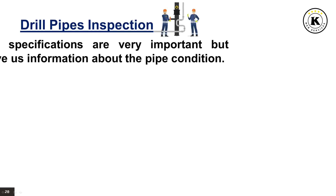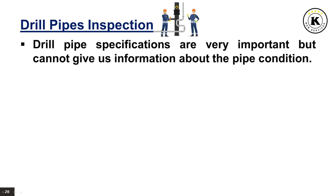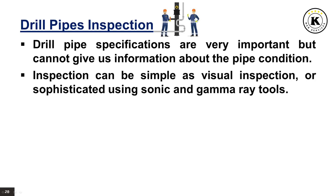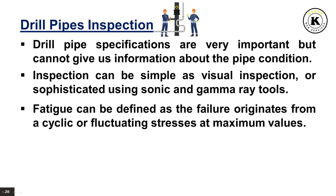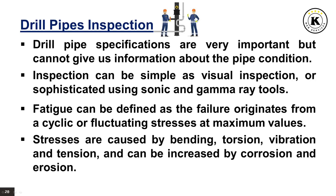Drill pipe inspection is crucial in drilling operations because specifications alone cannot give information about pipe condition. The inspection can range from simple visual inspection to more sophisticated methods using sonic and gamma ray tools. Fatigue is considered the main source of drill pipe failure — defined as failure originating from cyclic or fluctuating stresses at maximum values less than the tensile strength of the metal. These stresses are caused by bending, torsion, vibration, and tension, and can be increased by corrosion and erosion.